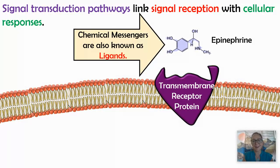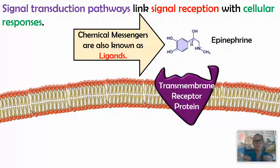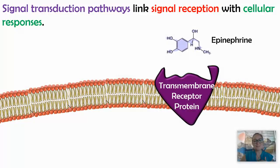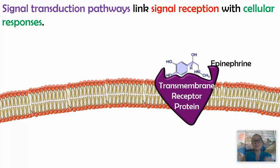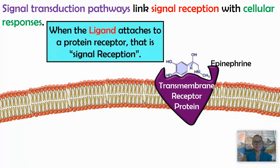I'll continue using the example of epinephrine. Epinephrine is a chemical messenger, a chemical signal, but it's also called a ligand. A ligand is a general name for a molecule that attaches to a larger molecule. Epinephrine, the ligand, will attach to a protein located within the membrane. This step is called signal reception — the cell receives the signal.